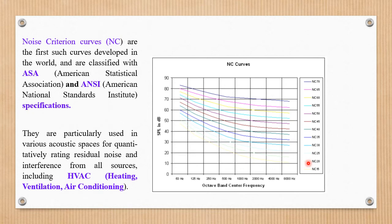They are particularly used in various acoustic spaces for quantitatively rating residual noise from all sources including HVAC — that is heating, ventilation, and air conditioning. As already mentioned, these noise criteria curves are usually used for indoor systems.